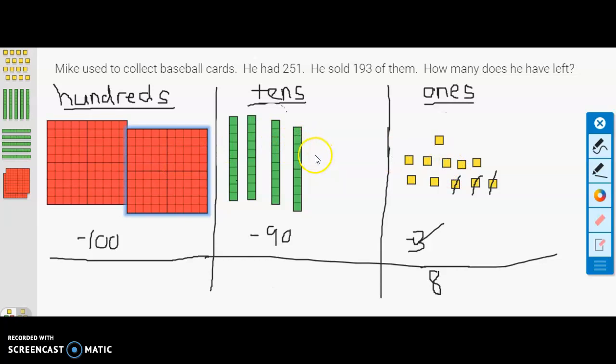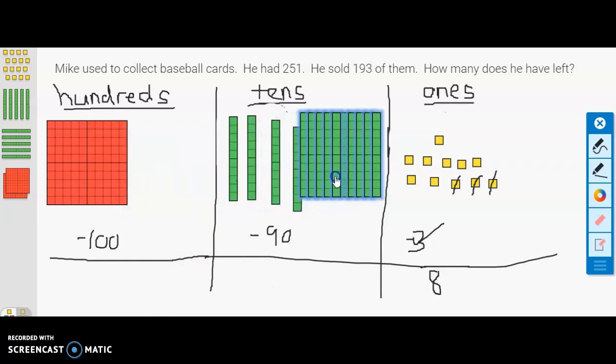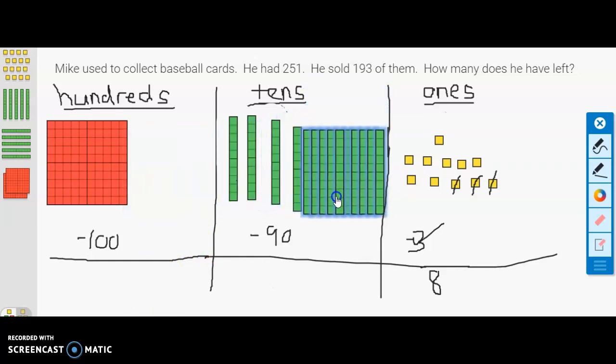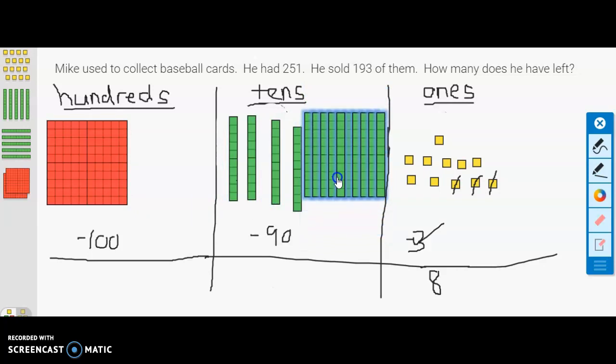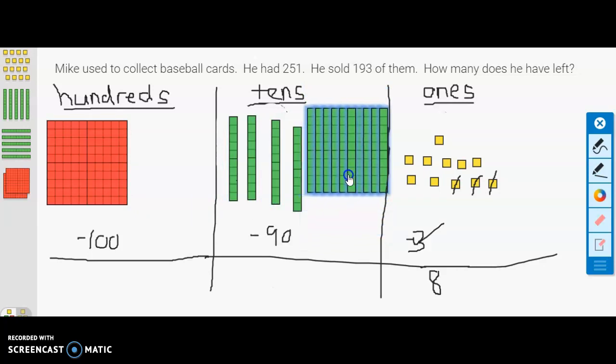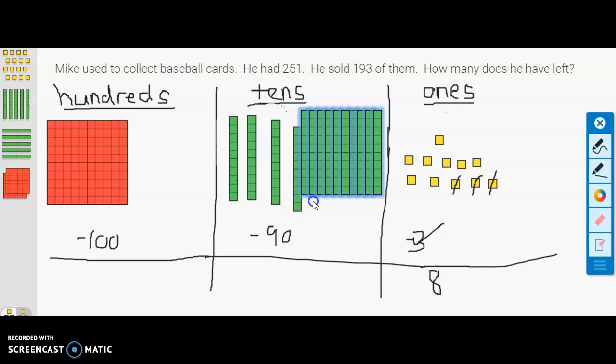However, just like we regrouped one ten for ten ones, we can regroup one hundred for ten tens. So let's try that. I'm going to break this up into ten tens. I'm going to bring it over here. I'm going to leave them together just like that. So now you can see that we have ten tens plus four, the four that we started with. We're going to have fourteen tens.